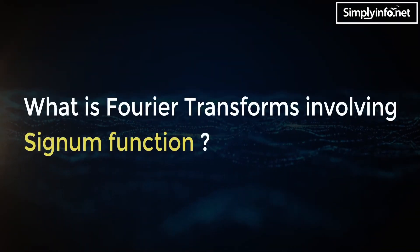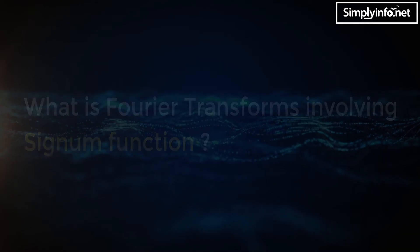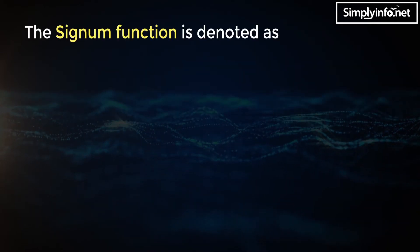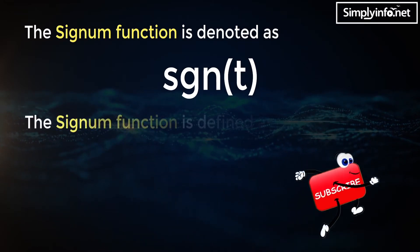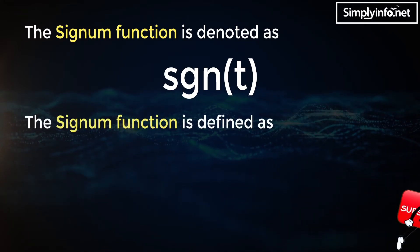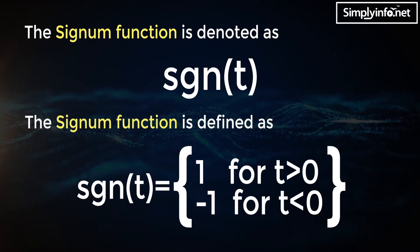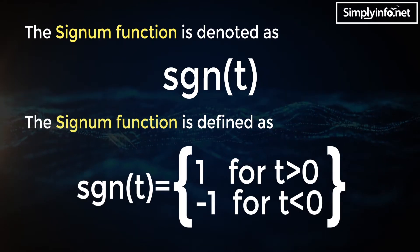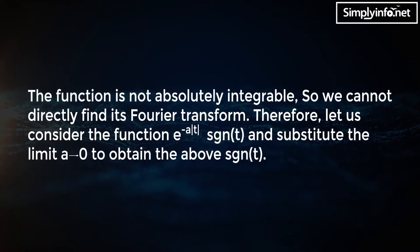What is the Fourier transform involving the signum function? The signum function is denoted as sgn(t). It is defined as sgn(t) equals 1 for t greater than zero, and sgn(t) equals minus 1 for t less than zero. The function is not absolutely integrable, so we cannot directly find its Fourier transform.